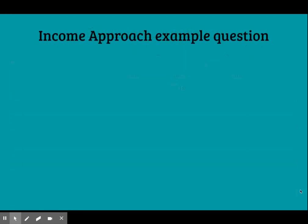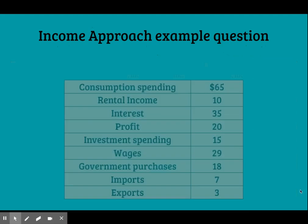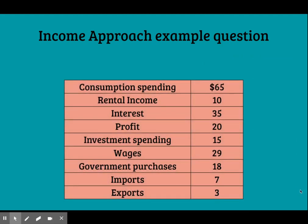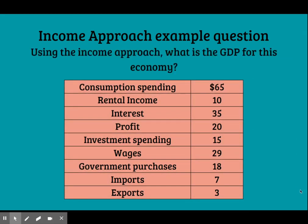Let's do a practice question. Look at the following chart for an economy. Using the income approach, what is the GDP for this economy? To find the GDP, we need to add up the factor incomes — rent, interest, profits, and wages. Once we add all that together, we get a total of $94.